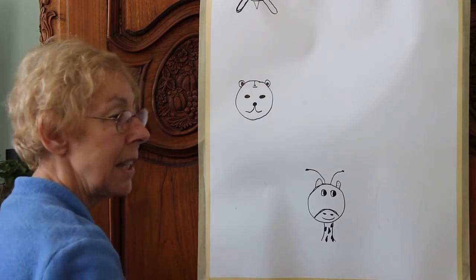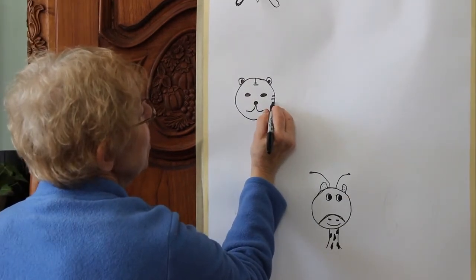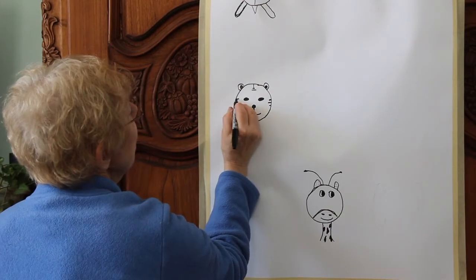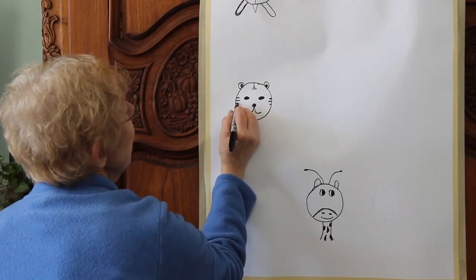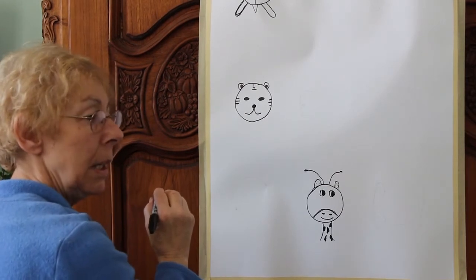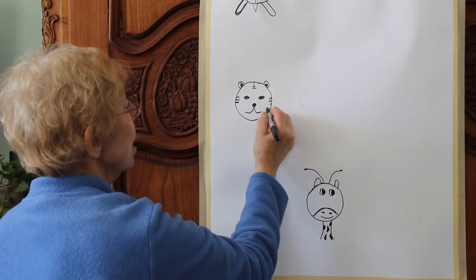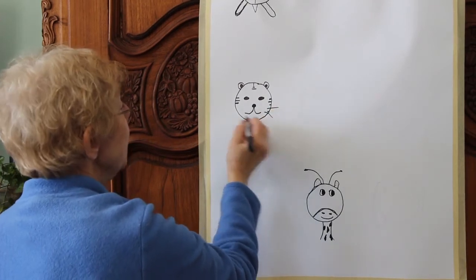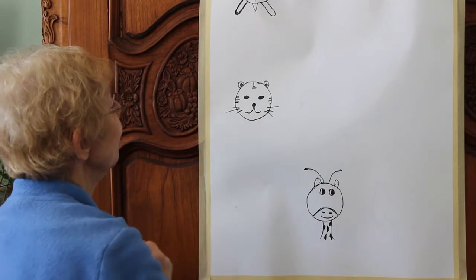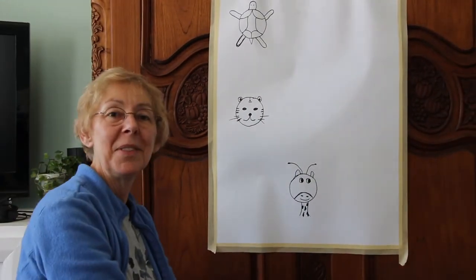And the last thing, oh, we got to put some stripes on him, right? One, there we go. Let's put some right over there, right over there, right over there. Oh, is he missing something? Whiskers. Let's try some whiskers. There we go. We have a tiger.